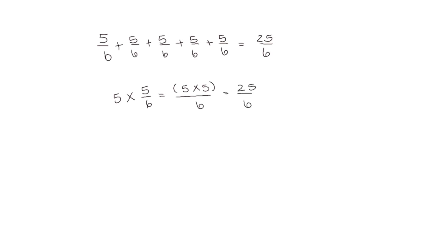When we have a fraction like this that's greater than 1, we need to decompose it into a mixed number. 6/6 is equal to 1, and I can make 4 of those because 6 times 4 is 24. So I have 25/6, and I can make 4 ones with 1/6 left over.